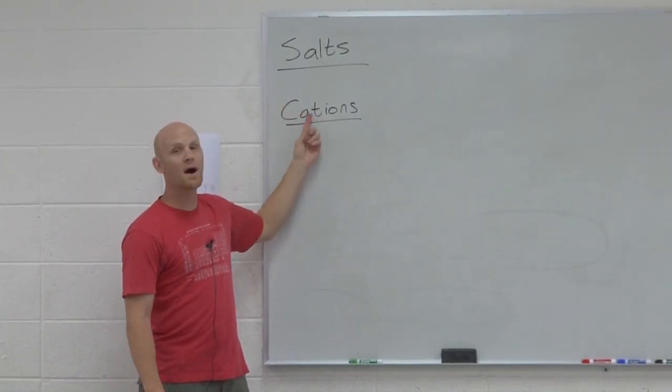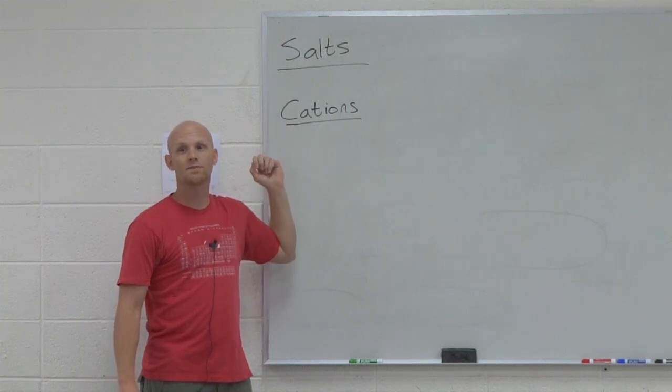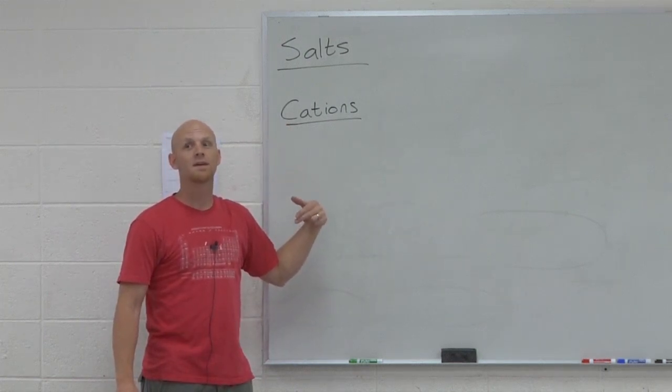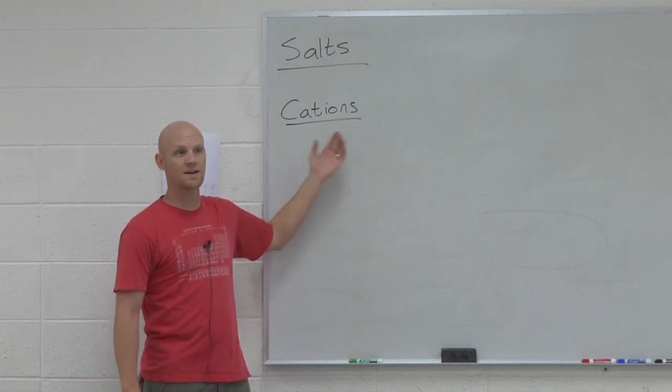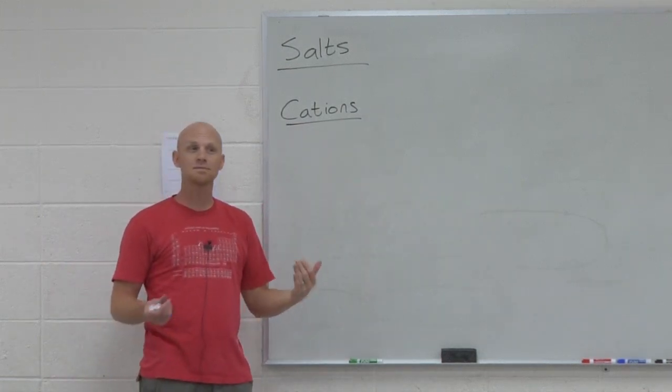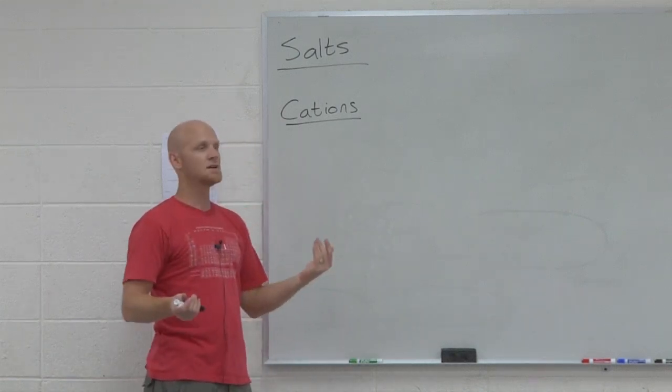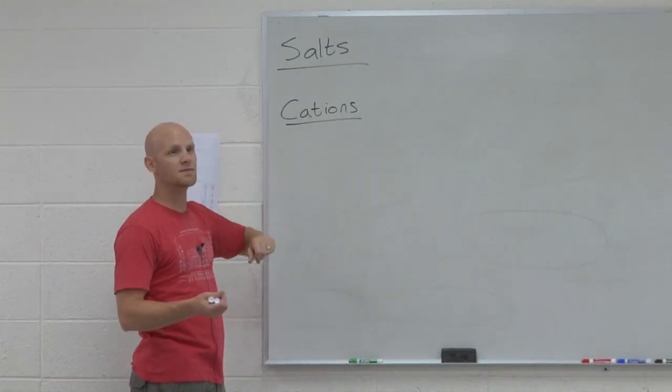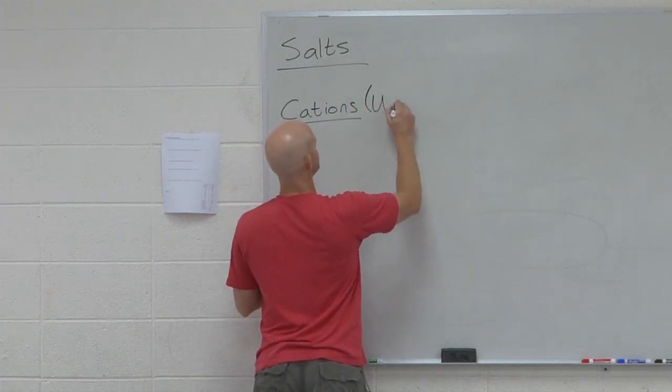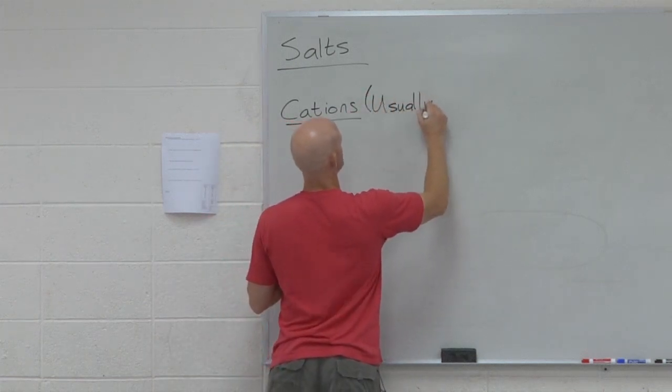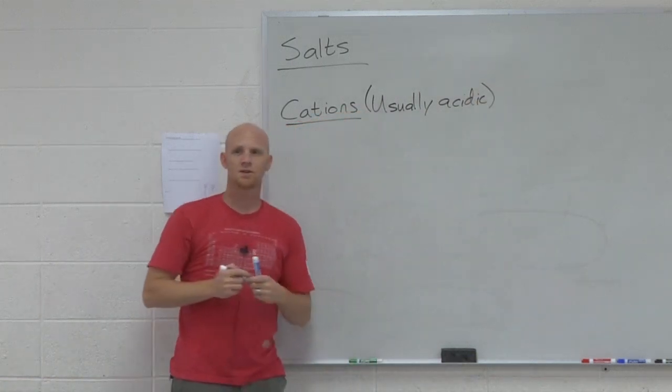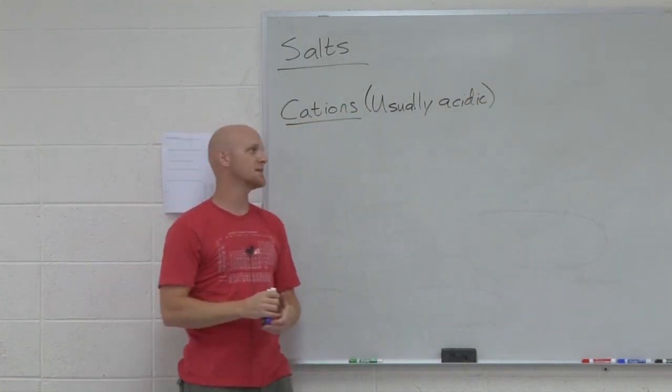Cations, because they have a positive charge, fit Lewis's definition of an acid because they can potentially accept electrons. Metal ions also have empty orbitals to accept those into. Cations are usually acidic, usually electron acceptors in a Lewis sense.